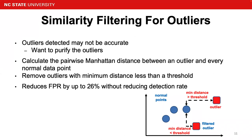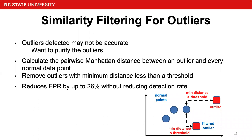Because outlier detection may not always be accurate, we use similarity filtering to purify those outliers. We calculate the pairwise Manhattan distance between the outliers and every normal data point, and then remove those outliers whose minimum distance is less than a certain threshold. As we can see from the example on the bottom right, for some outliers the minimum Manhattan distance is greater than the threshold, so the outlier is kept. However, for outliers at the bottom, because the minimum Manhattan distance is less than the threshold, those outliers are filtered. This simple approach helps reduce the false positive rate by up to 26% without reducing detection rate.